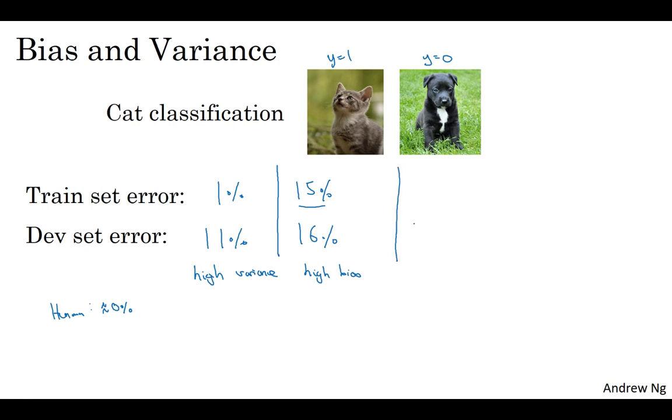Now, here's another example. Let's say that you have 15% training set error, so that's pretty high bias. But when you evaluate on the dev set, it does even worse, maybe it does 30%. In this case, I would diagnose this algorithm as having high bias because it's not doing that well on the training set, and high variance. So this is really the worst of both worlds. And one last example, if you have 0.5% training set error and 1% dev set error, then maybe your users are quite happy that you have a cat classifier with only 1% error, then this would have low bias and low variance.